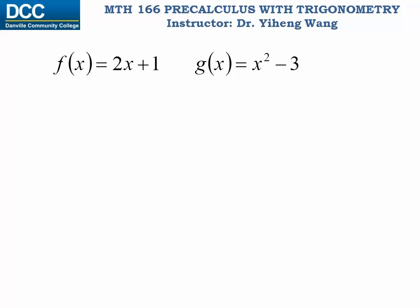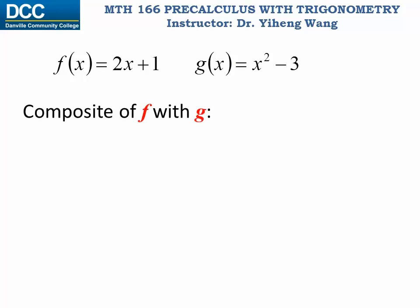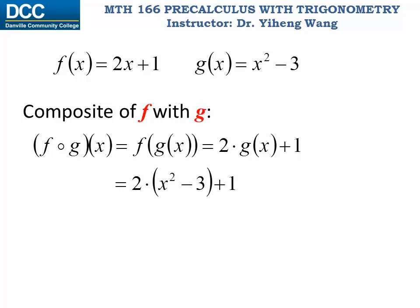Therefore, for two functions — here using f(x) equals 2x plus 1 and g(x) equals x squared minus 3 as an example — the composite function of f with g is denoted by f circle g, which equals f of g(x). We evaluate this composite function the same way we evaluate any function: substitute x in f with g(x). Since g(x) equals x squared minus 3, we substitute that in, rearrange and simplify, and get 2x squared minus 5.